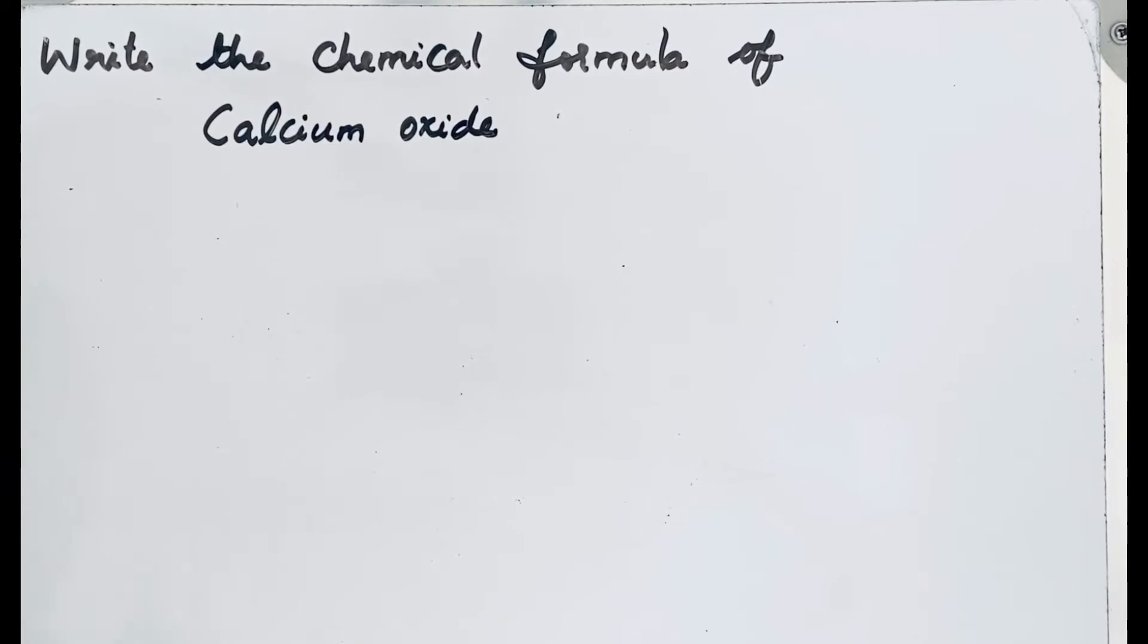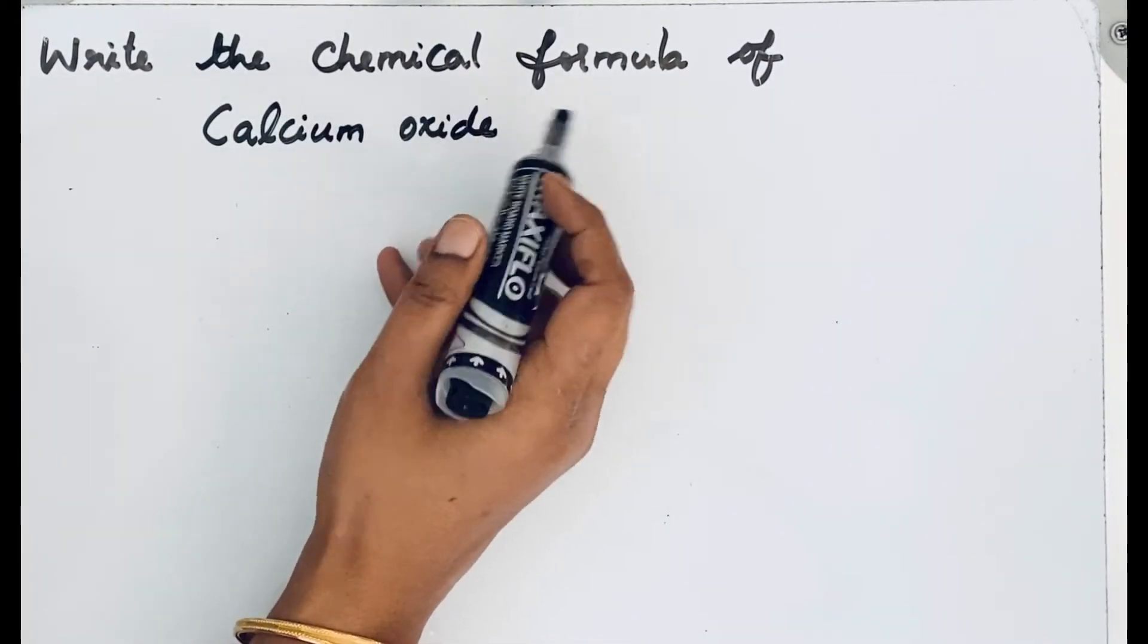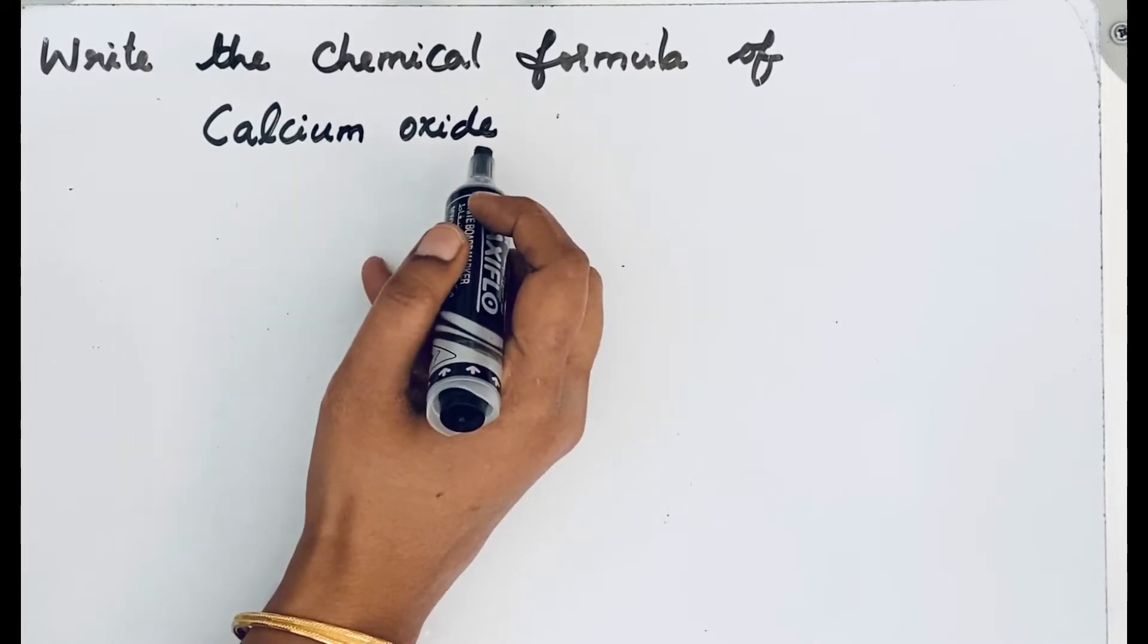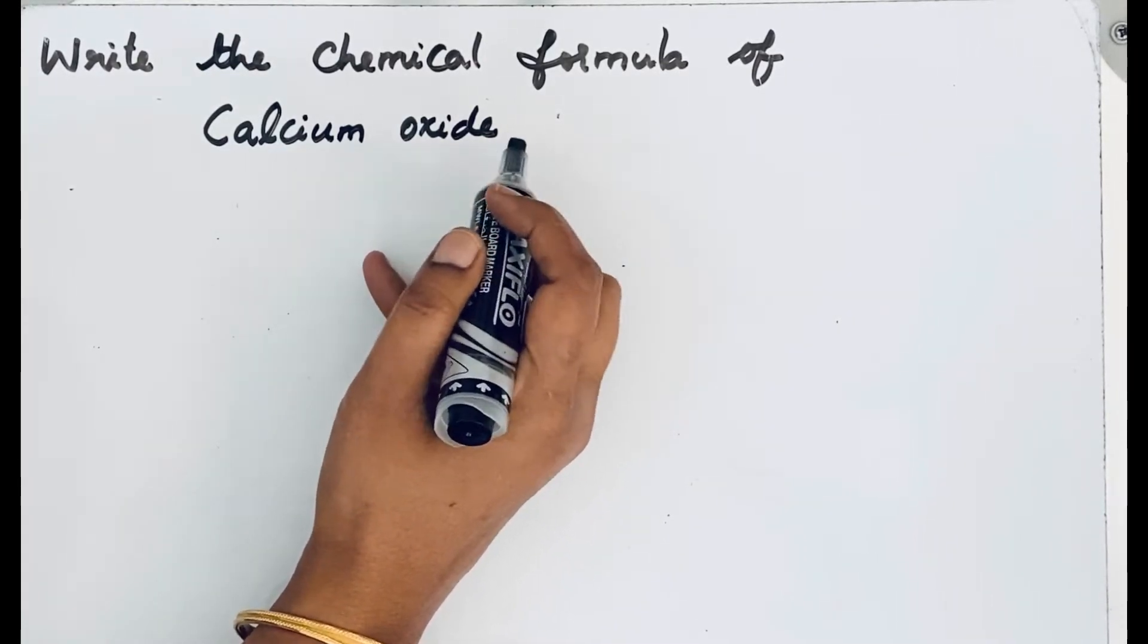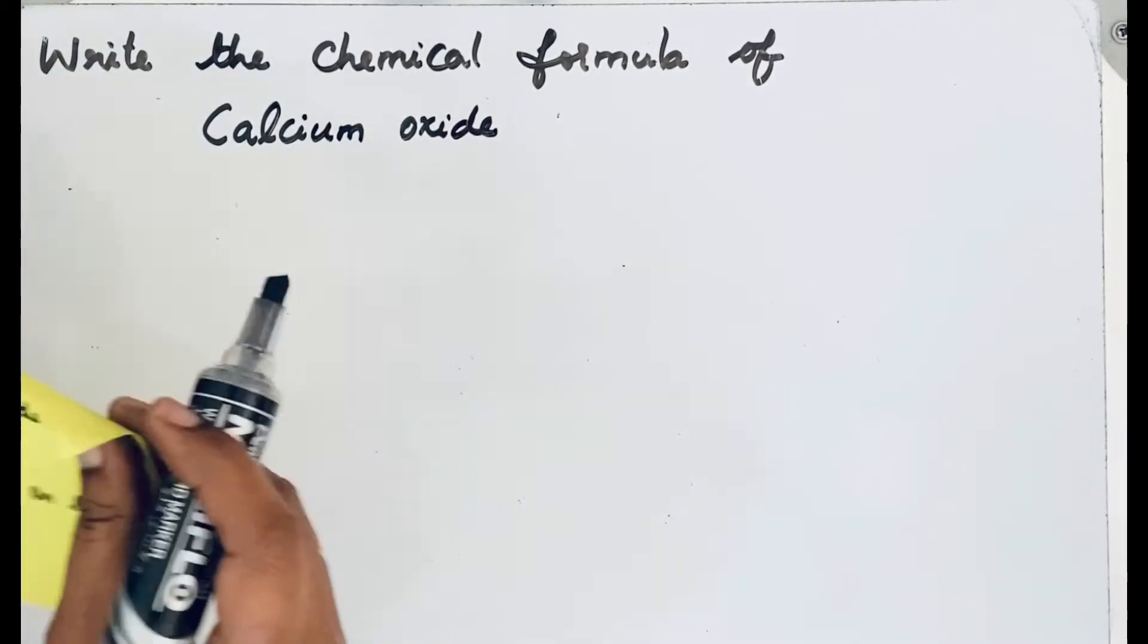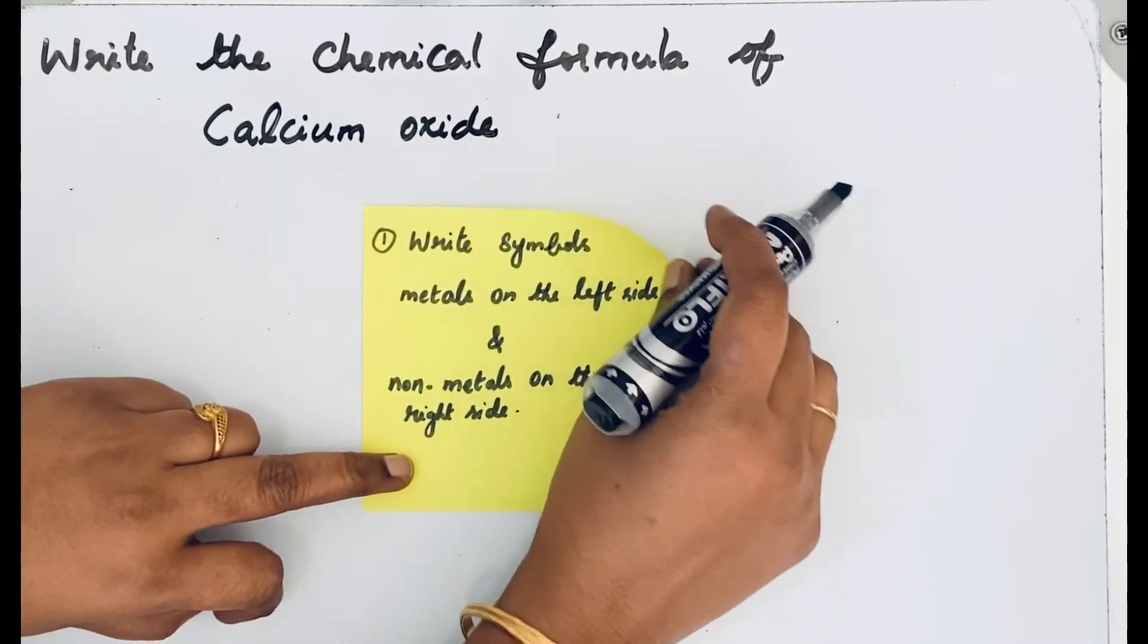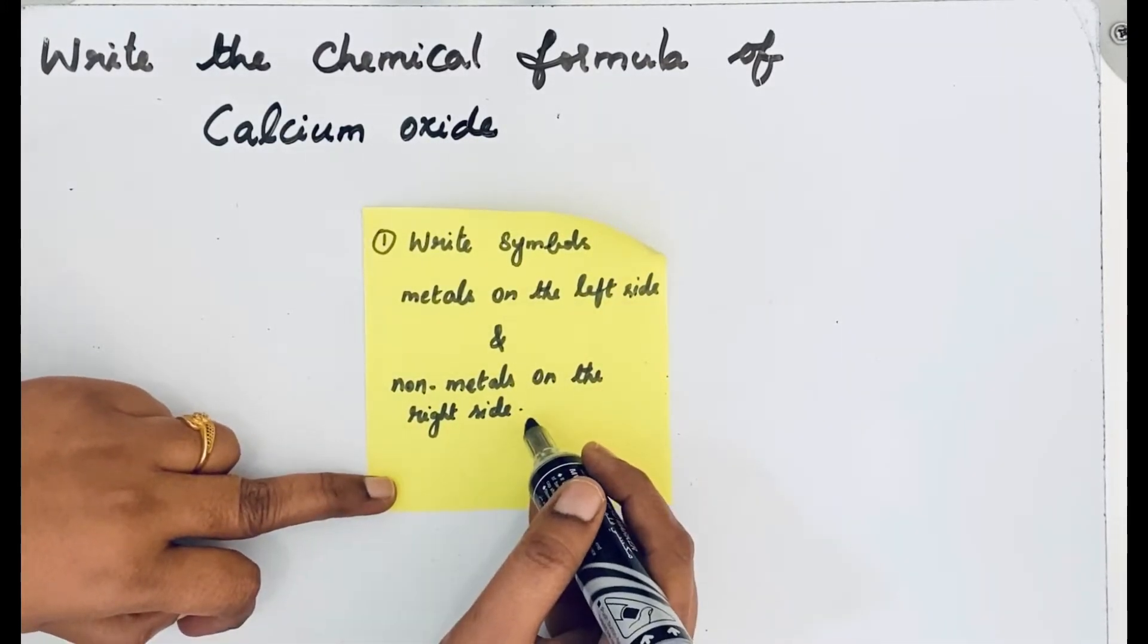Welcome to Aurora Chemistry for Everyone. In this video, let us see how to write the chemical formula of calcium oxide. There are some steps for writing the chemical formula. Calcium oxide is a binary compound. The first step is to write the symbols of metals on the left side and non-metals on the right side, because these binary compounds are formed by two ions.